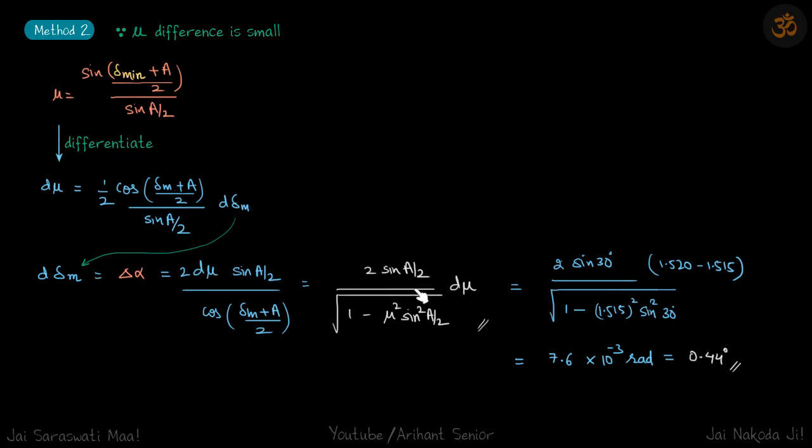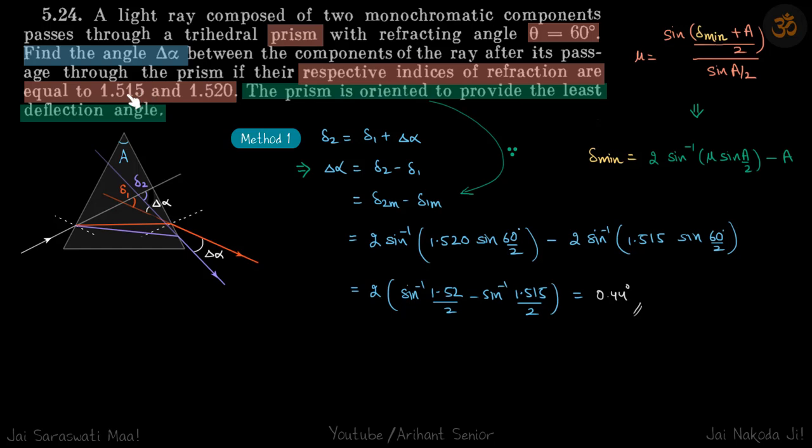So now we just put the values. So we'll put the value of A as 60 degree, D mu will be difference of the refractive indices, and mu is the first one that is 1.515. So we just solve that and we'll get the same answer 0.44 degree. So we got the same answer because mu difference is small. If mu difference is large, we have to do it with this brute method.